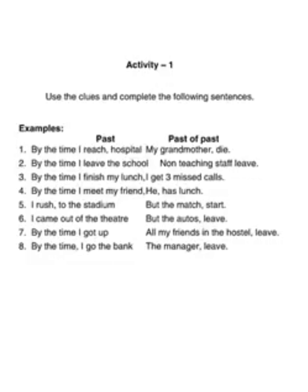Fourth: 'By the time I met my friend, he had had lunch.' Let's look at this more carefully. The clue is 'by the time I meet my friend' — that becomes 'by the time I met my friend' in past. The verb is 'has lunch,' and the third form of 'has' is 'had,' but you need one more 'had' to form the past perfect, so it becomes 'he had had lunch.' The first 'had' is the helping verb; the second 'had' is the main verb. Fifth: 'I rushed to the stadium but the match hadn't started.' 'I came out of the theater but the autos had left.' 'By the time I got up, all my friends in the hostel had left.' 'By the time I went to the bank, the manager had left.'